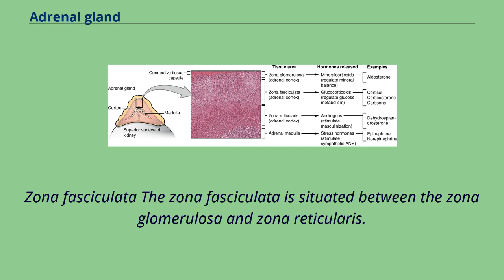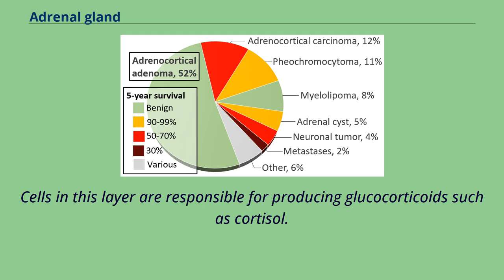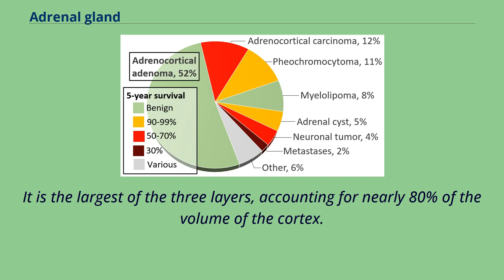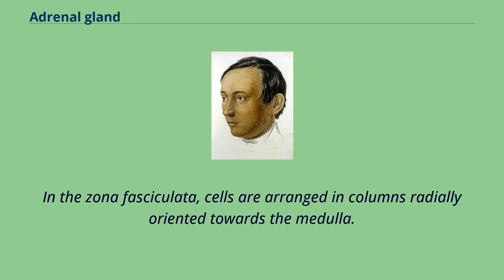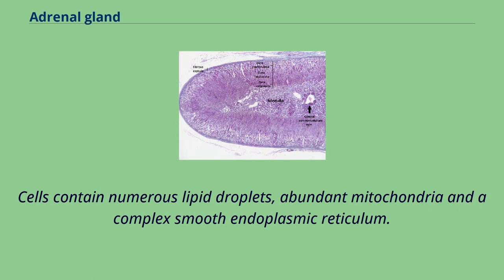The zona fasciculata is situated between the zona glomerulosa and zona reticularis. Cells in this layer are responsible for producing glucocorticoids such as cortisol. It is the largest of the three layers, accounting for nearly 80% of the volume of the cortex. In the zona fasciculata, cells are arranged in columns radially oriented towards the medulla. Cells contain numerous lipid droplets, abundant mitochondria, and a complex smooth endoplasmic reticulum.